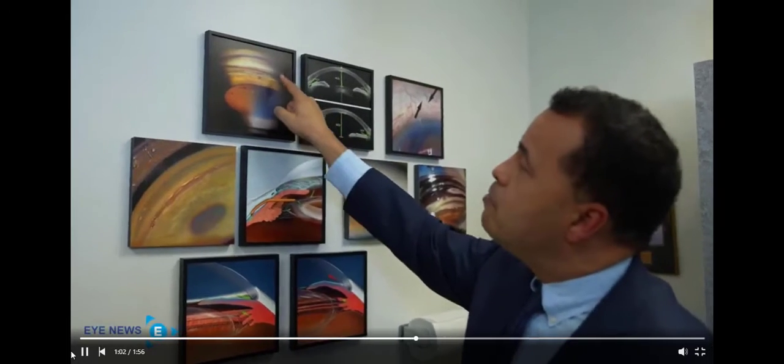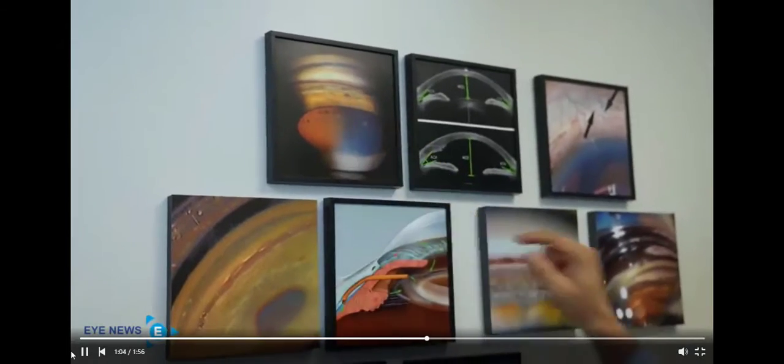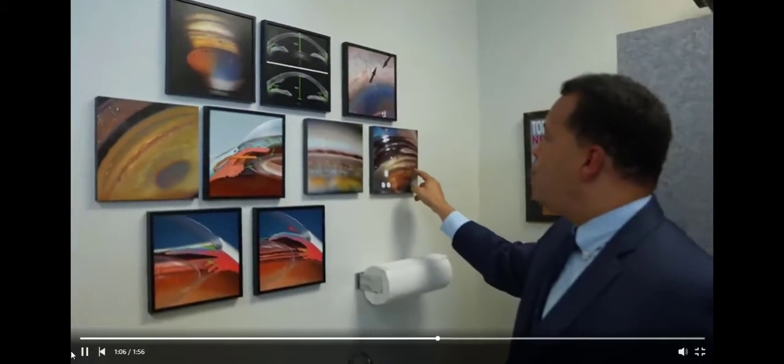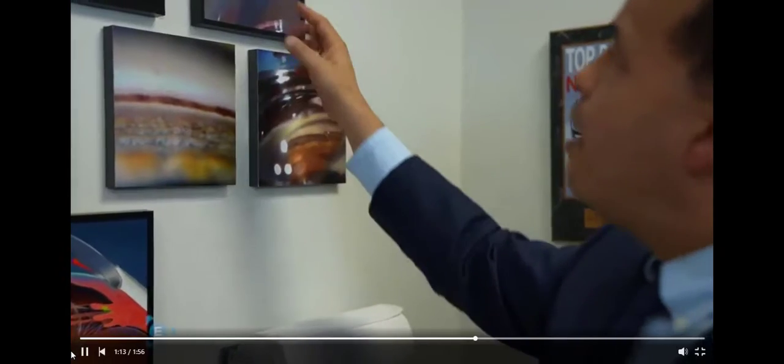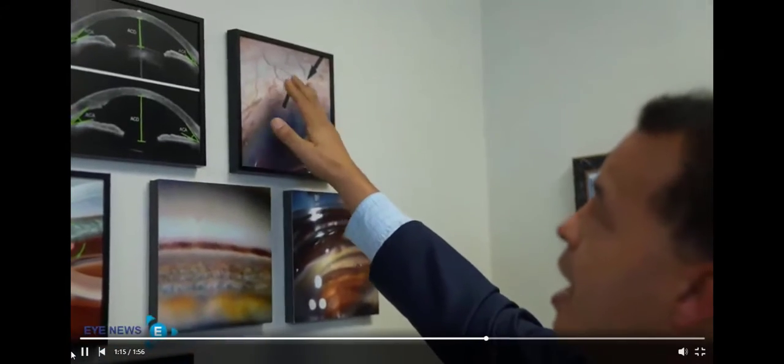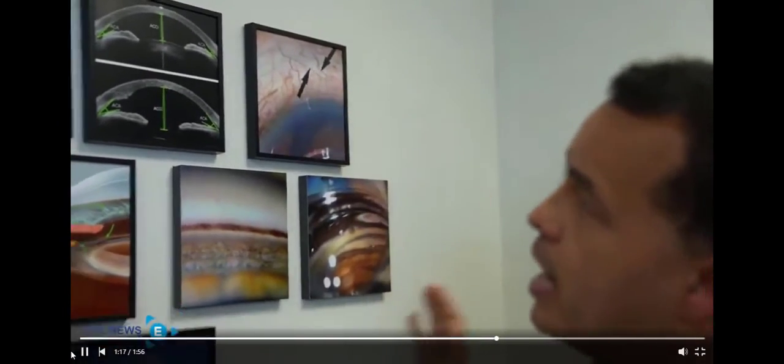And then this pigment that's blocking off the drain, at the same time that I do the cataract surgery, I'll put a stent in. This is a hydra stent that bypasses the trabecular meshwork, opens up the canal, and restores outflow to the natural drain of the eye, the aqueous veins.